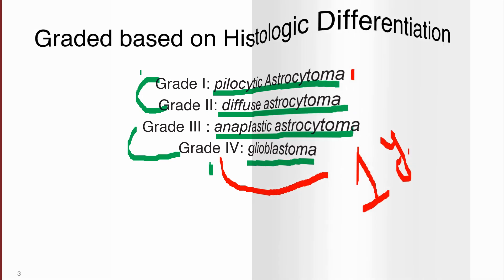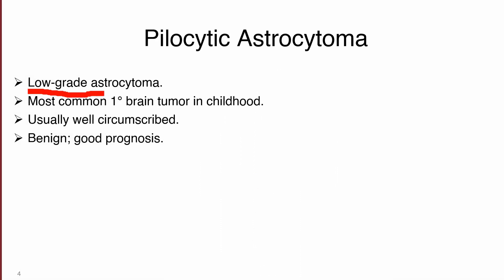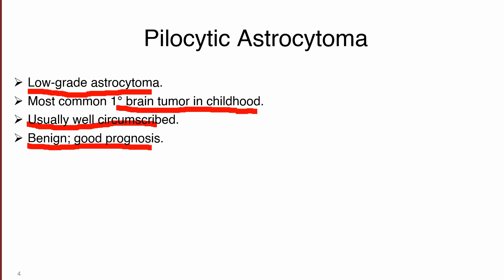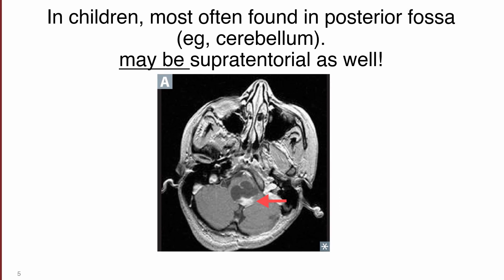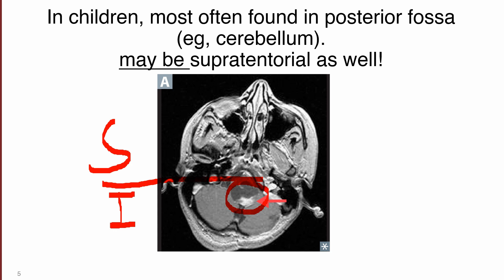Pilocytic astrocytoma is a low-grade astrocytoma in children. It is well-circumscribed, benign, and has a very good prognosis. As a general rule, in children tumors are generally located infratentorially, while in adults they are present supratentorially. Pilocytic astrocytoma can occur supratentorially as well, but a key feature is that the tumor forms a mural cystic lesion — a tumor mass with a cystic lesion on brain MRI is highly suggestive of pilocytic astrocytoma.